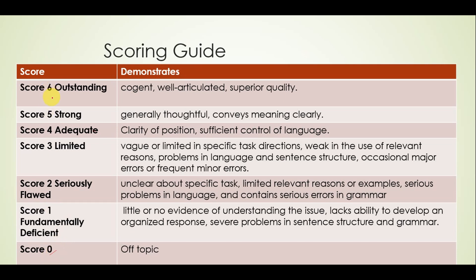A score of 6 means your essays are outstanding — persuasive, well-articulated, and of superior quality. A score of 5 means your essays were strong, meaning the content was generally thoughtful and conveyed meaning clearly. A score of 4 is adequate.